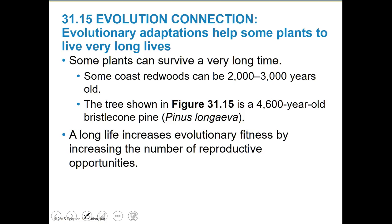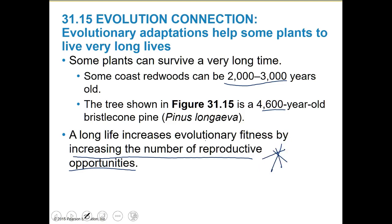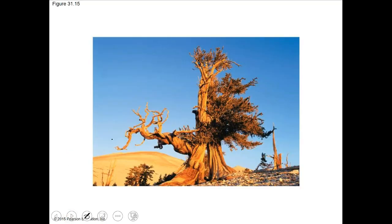Some plants can survive a really long time. Those coastal redwoods are 2,000 to 3,000 years old. Our next tree is about 4,600 years old — it's a bristlecone pine. A long life increases evolutionary fitness by increasing the number of reproductive opportunities. That's the key for evolutionary success — more reproductive opportunities. Long life only works if we get more reproductive opportunities.